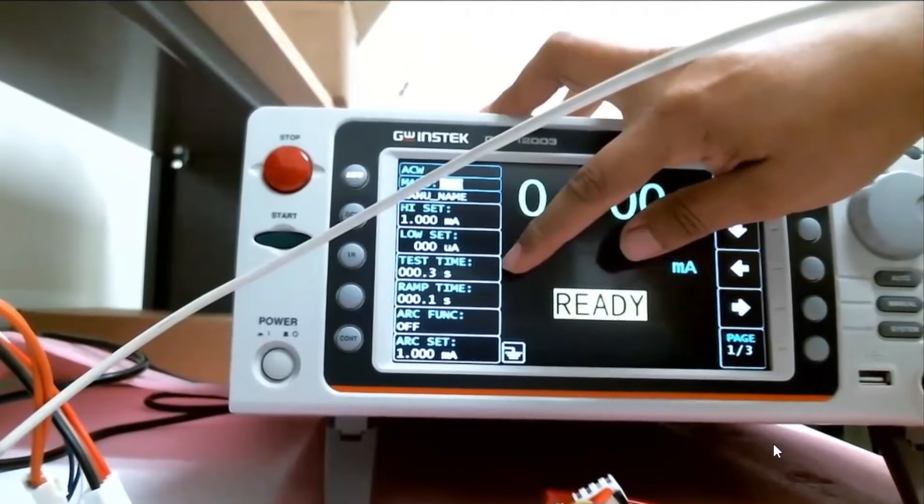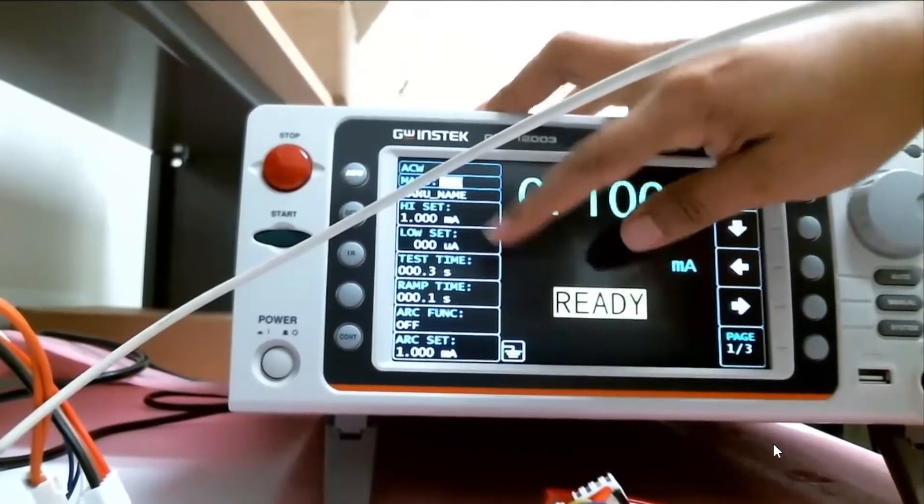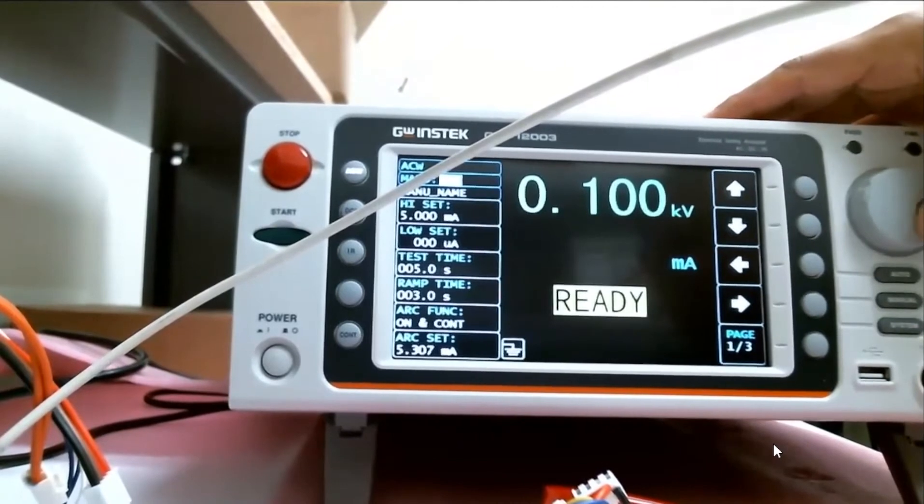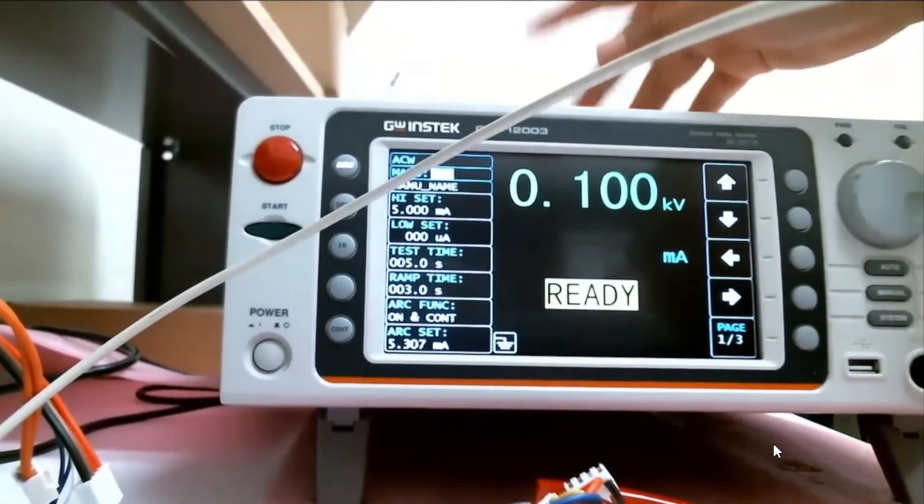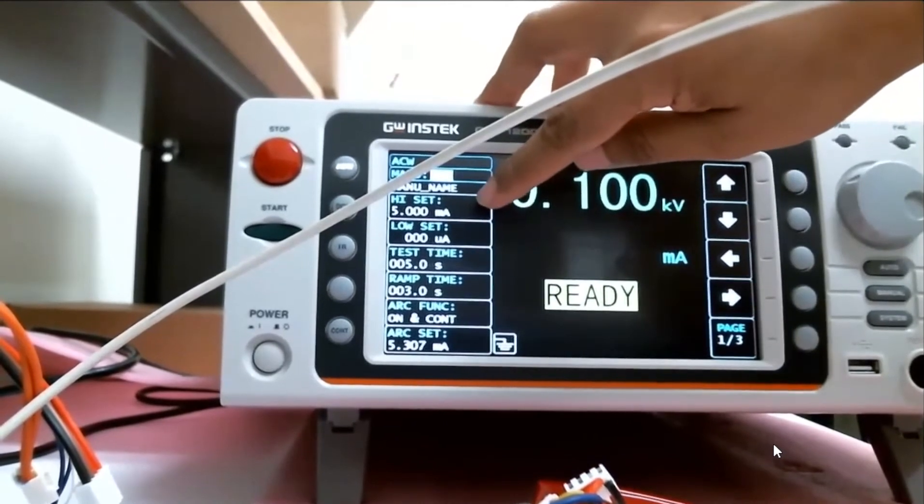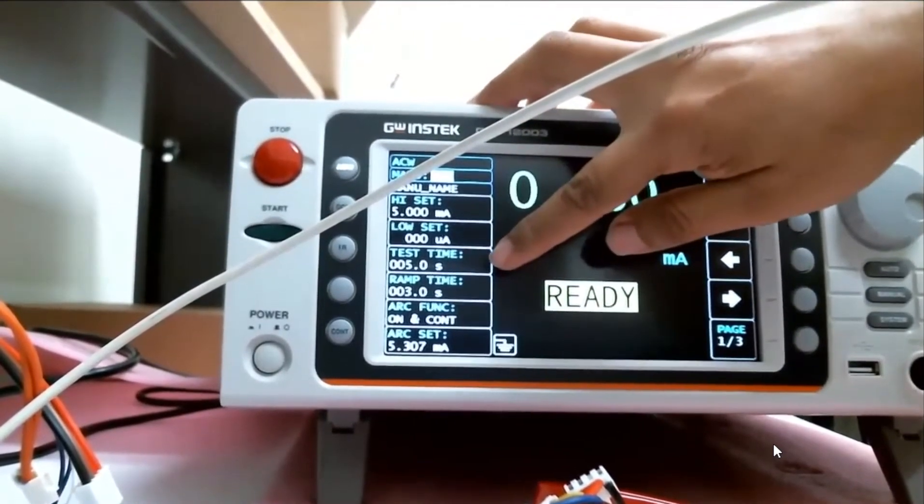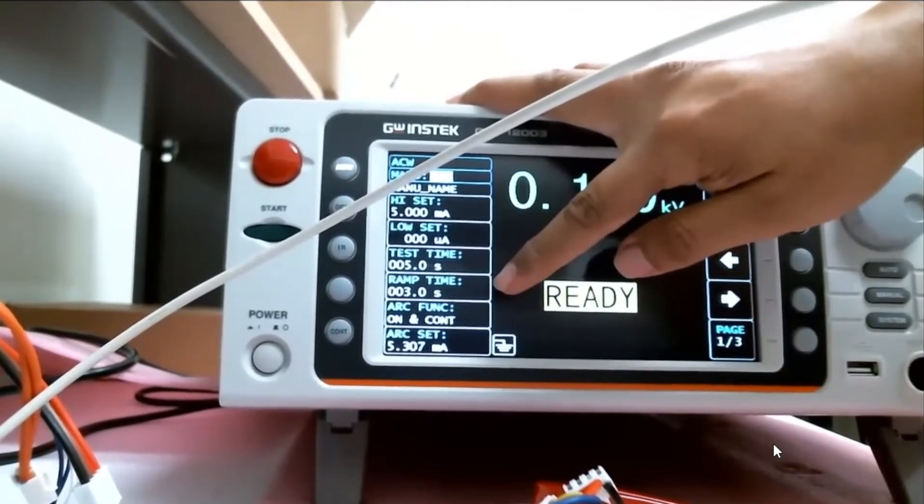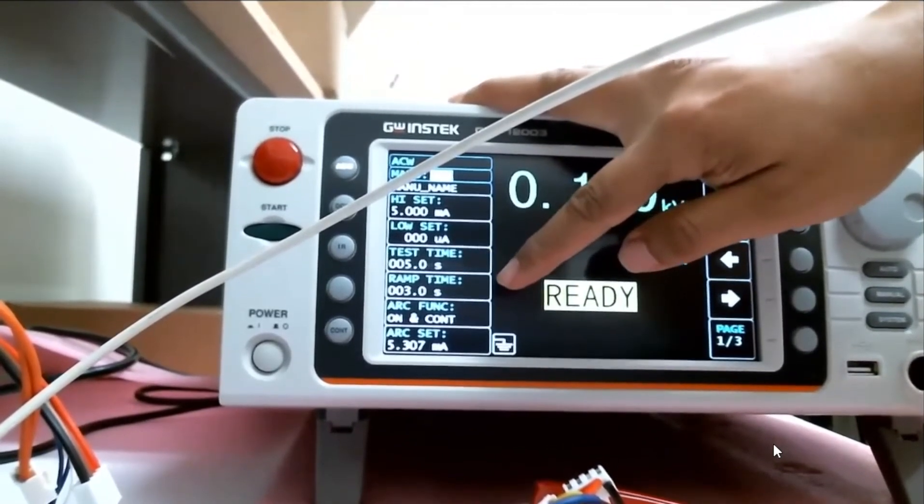Test time, I'm going to run it for about 300 milliseconds, my ramp up time, I'll run—I'm sorry, that's wrong, there we go. In this case, this is actually my example: 5 milliamps is my high set, I will test it for 5 seconds, I will ramp up, meaning that I won't have instantaneous voltage output, it will take some time, in this case 3 seconds.